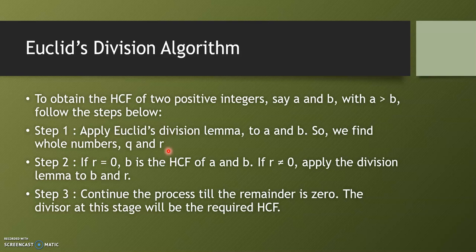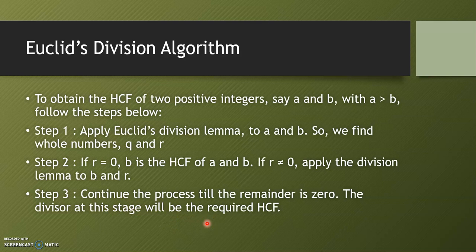Step two is to check whether the remainder is zero. If the remainder is zero, then B is the HCF of A and B. If the remainder is not zero, then apply the division lemma to B and R — the divisor becomes the new dividend and the remainder becomes the new divisor. Continue this process until the remainder is zero; the divisor at the last stage is the required HCF.